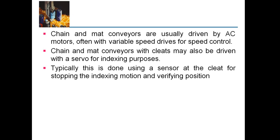The chain and mat conveyor is usually driven by an AC motor, often with a variable speed drive for speed control. Chain and mat conveyors with cleats may also be driven by a servo for indexing purposes. Typically this is done using a sensor at the cleat for stopping the indexing motion and verifying position — the sensor verifies position and stops the motor at a very precise location, which is why it is called indexing motion.